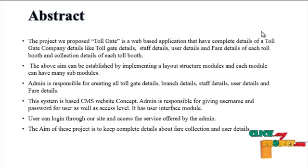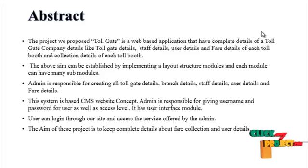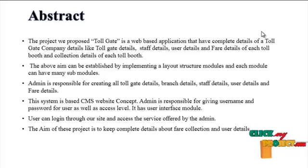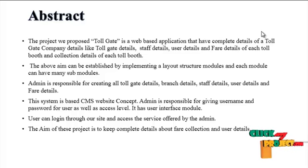The system is implemented using a layout structure model where each model can have many sub-models. Admin is responsible for creating all Tollgate details, branch details, staff details, user details, and fare details. The system is based on a CMS-based concept. Admin is responsible for giving a username and password for users as well as access level. It has a user interface model. The aim of this project is to keep complete details about fare collections and user details.